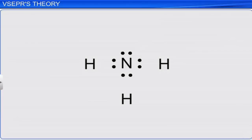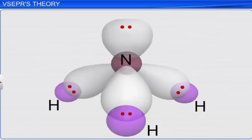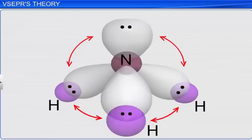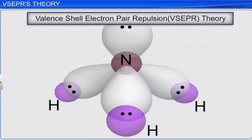Lewis concept does not explain the shapes of molecules. In 1940, this drawback led Sedgwick and Powell to develop a theory to determine the shape of a molecule based on repulsions between electron pairs present in the valence shell around the central atom. This theory is named the Valence Shell Electron Pair Repulsion theory, or VSEPR theory. It was further developed and redefined by Gillespie and Nyholm in 1957.